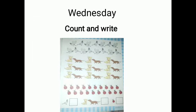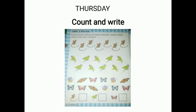Wednesday: Count and write. Book page number 5 — look at the pictures and count and write in the boxes. Thursday: Count and write. Book page number 4 — count the same pictures and write in the boxes.